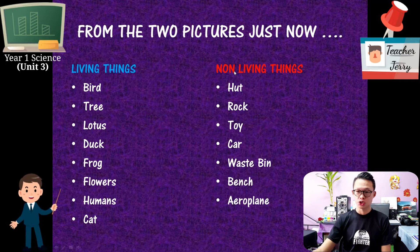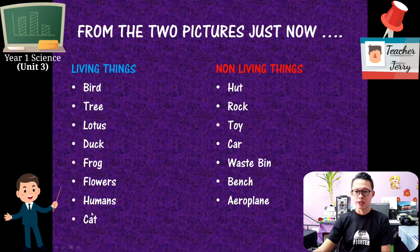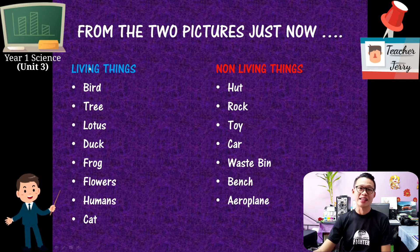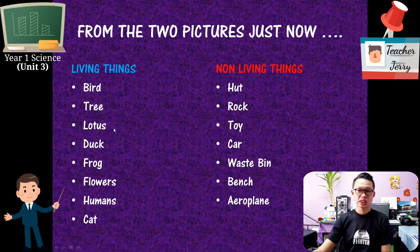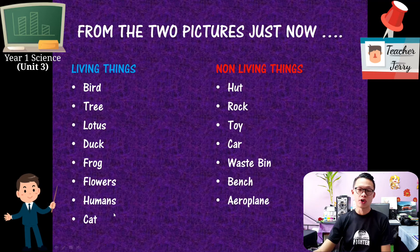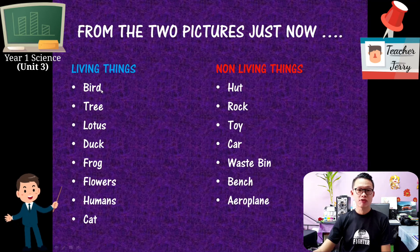From the two pictures, we can identify many living things and many non-living things on pages 18 and 19. There are 8 living things: bird (B-I-R-D), tree (T-R-E-E), lotus (L-O-T-U-S), duck (D-U-C-K), frog (F-R-O-G), flowers (F-L-O-W-E-R-S), humans, and cat (C-A-T).